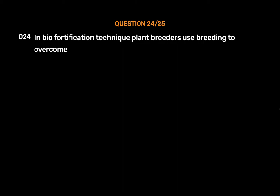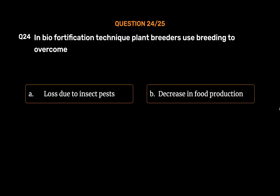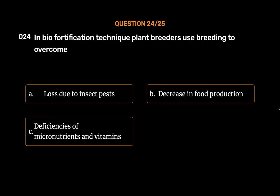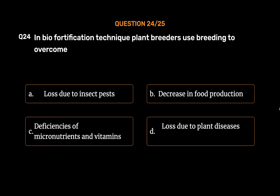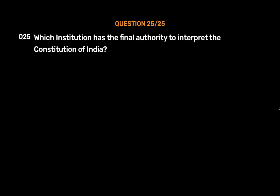Question No. 24. In biofortification technique, plant breeders use breeding to overcome deficiencies. The correct answer is Option C. Biofortification involves plant breeding, transgenic techniques, or agronomic practices. Biofortified staple crops, when consumed regularly, will generate measurable improvements in human health and nutrition.